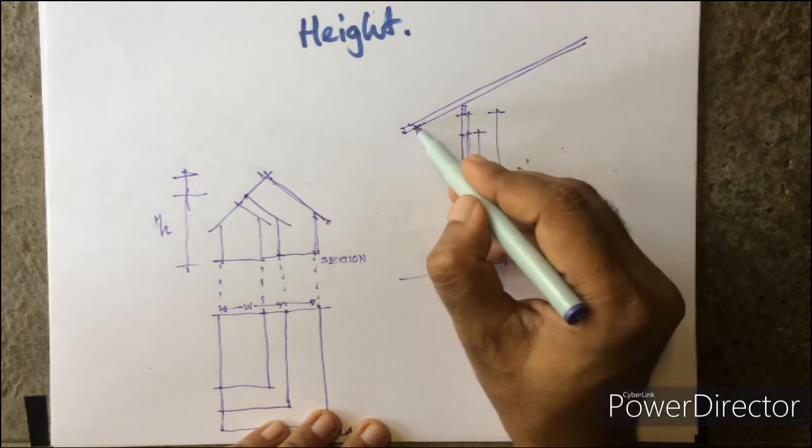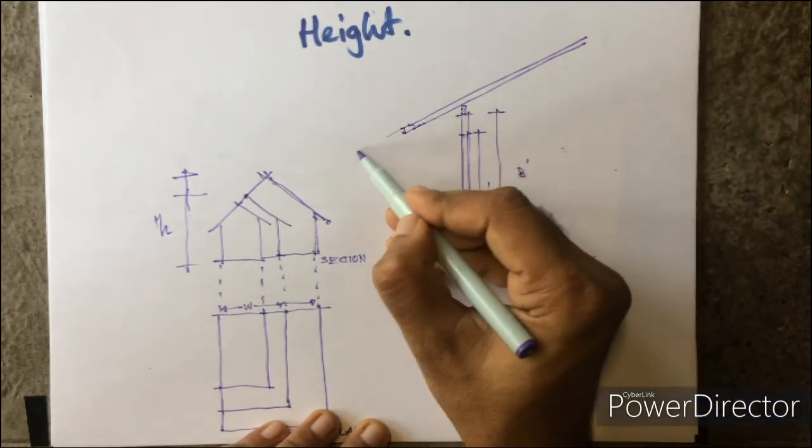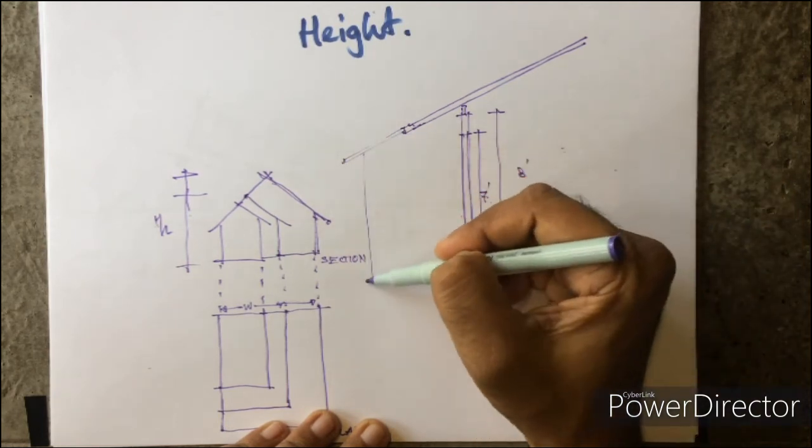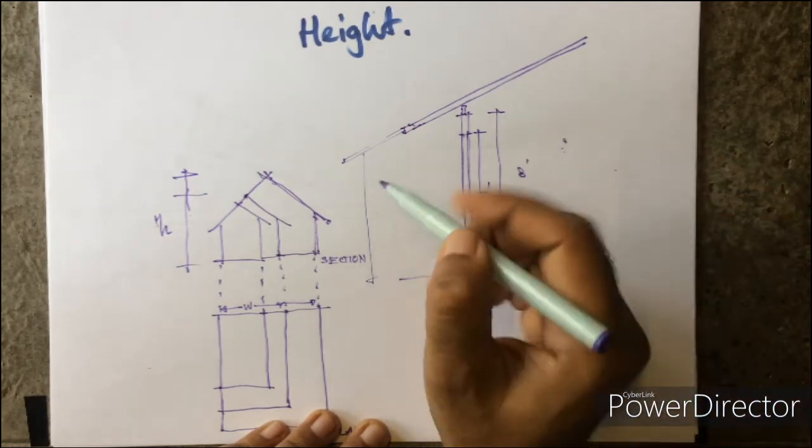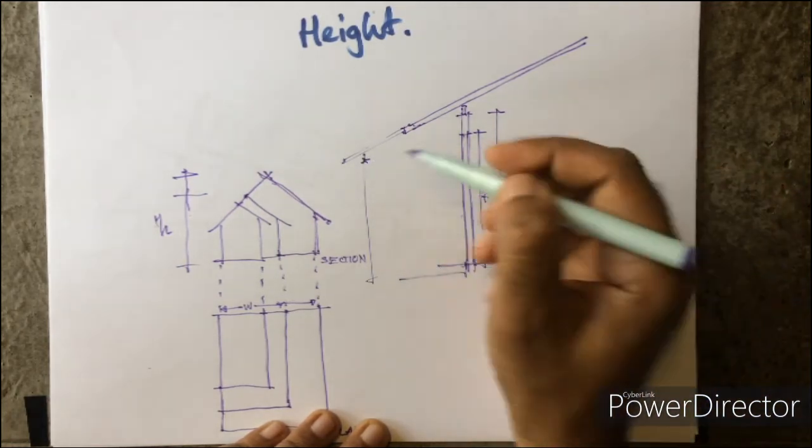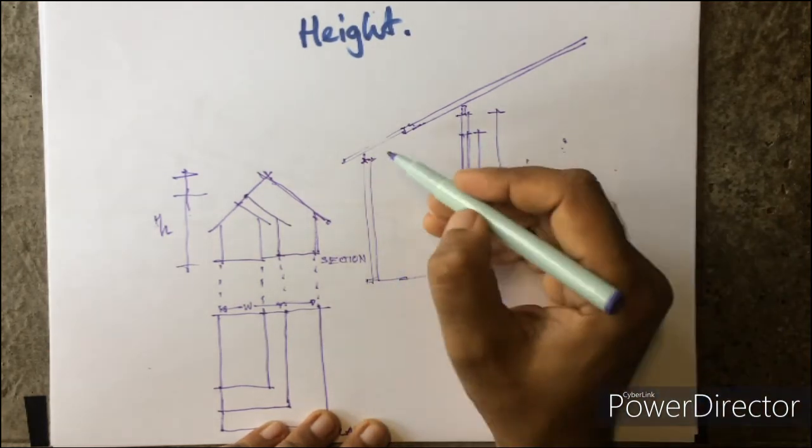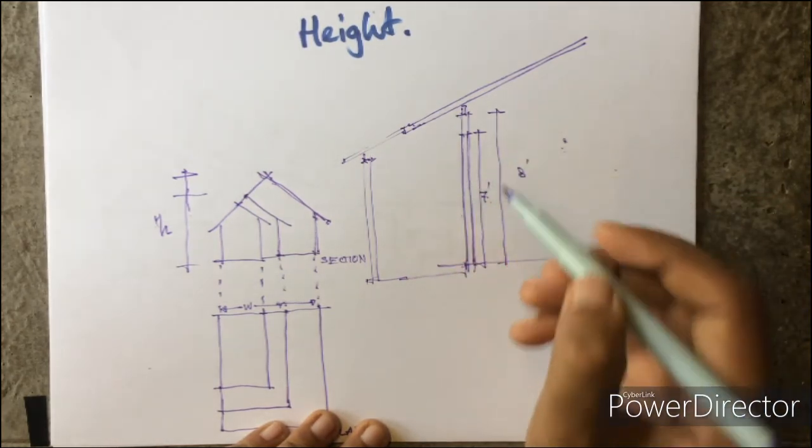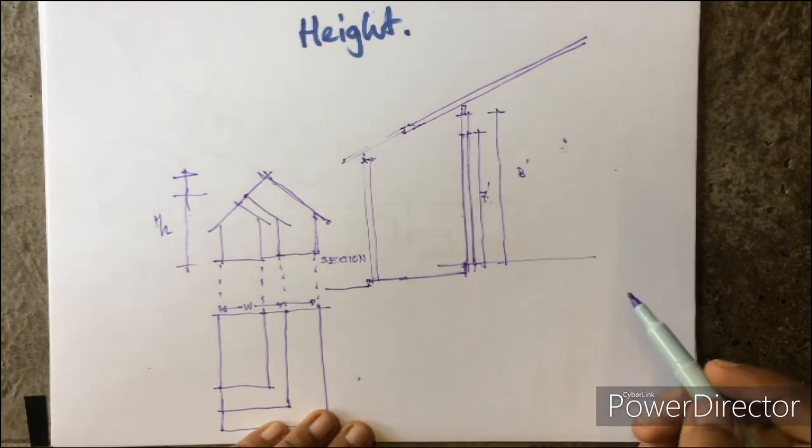If the eve is three feet, this is okay. But if the eve is more—I mean if there's a veranda—you have to consider the height here at this point. At this point, it's ideal if you have at least eight feet. At least try to maintain that.